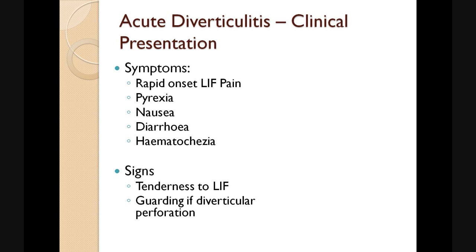Our preventative measures have failed, and we've got a patient who presents with acute diverticulitis. These patients typically present with a rapid-onset left iliac fossa pain. They may be pyrexial, nauseous, and have a change in bowel habits, such as diarrhoea or even blood from the back passage. On clinical examination, we find that they are most tender in their left iliac fossa, and guarding is present if there is a perforation.